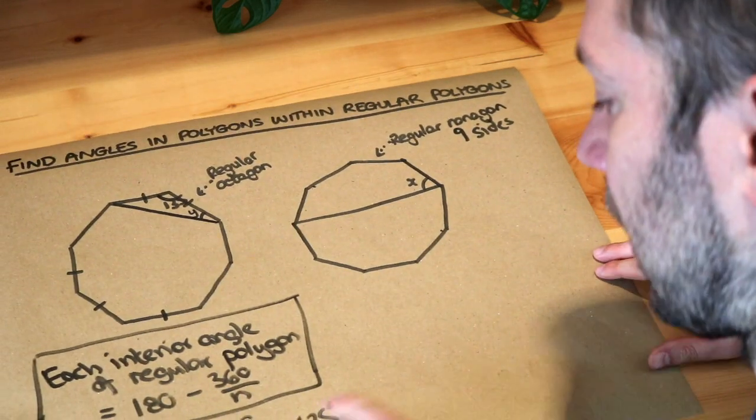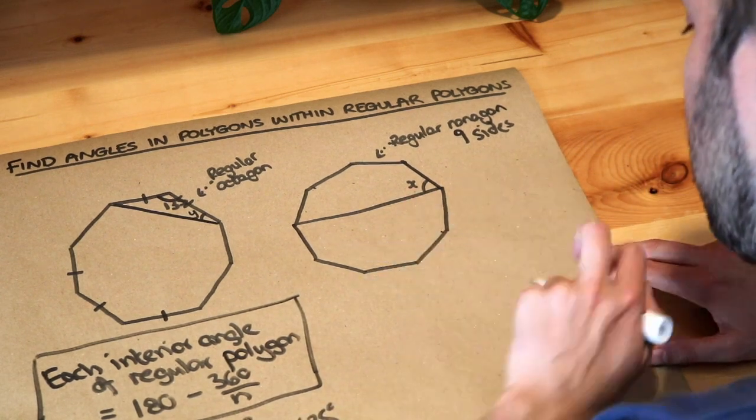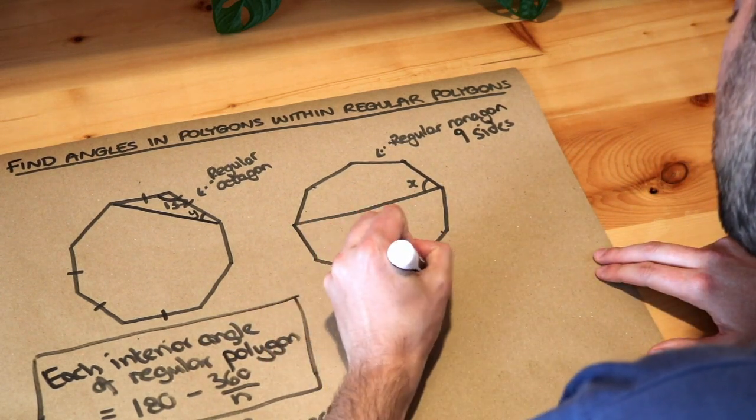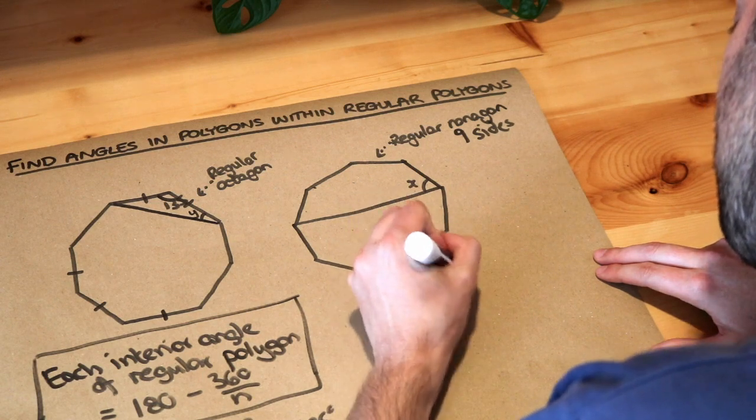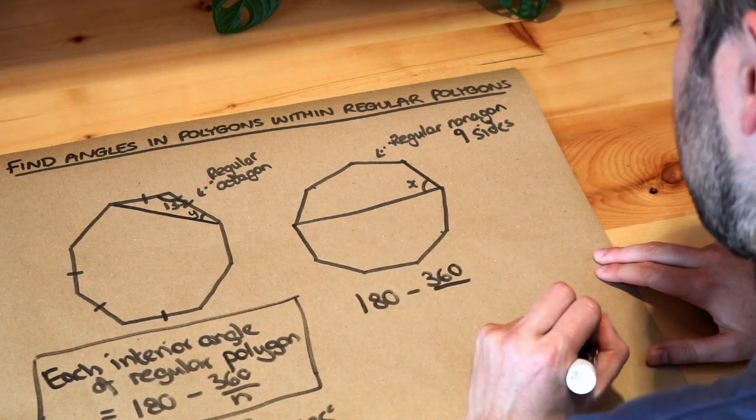What about over here? Well we repeat the same as before. We find the interior angle of this nonagon, so we do 180 minus 360 divided by the number of sides which is 9, and that gives you 140 degrees.